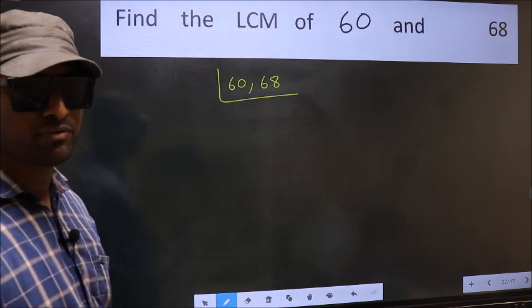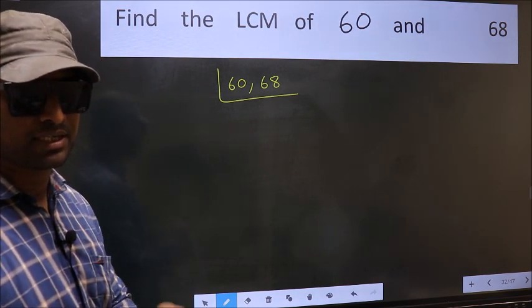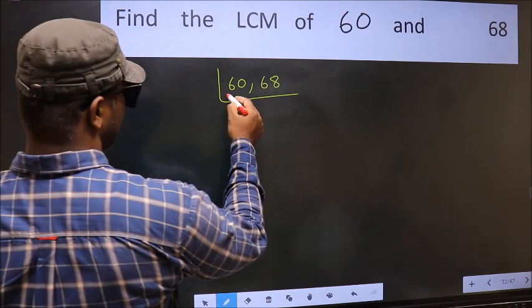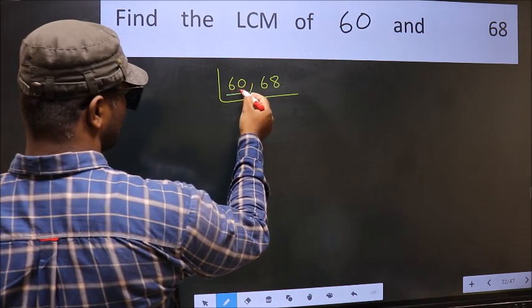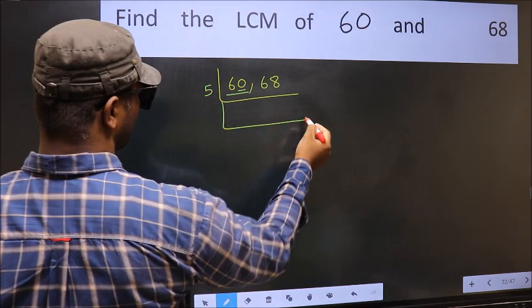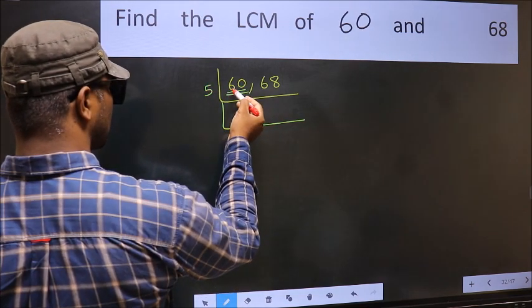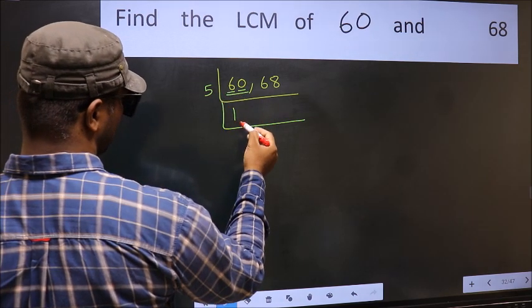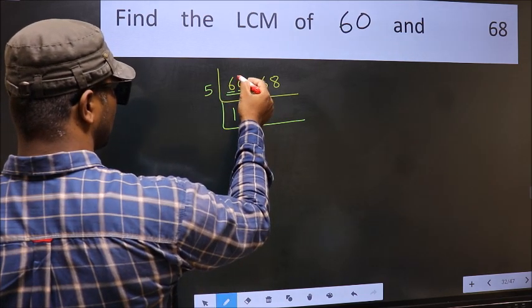Now you should focus on the first number, which is 60 here. For this number, last digit is 0, so directly take 5. First number 6. A number close to 6 in the 5 table is 5 once 5. 6 minus 5 is 1, 1 carried forward 10.